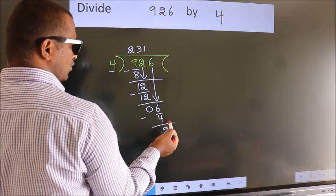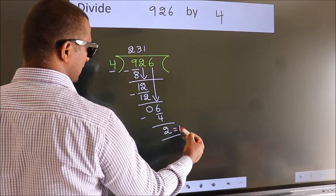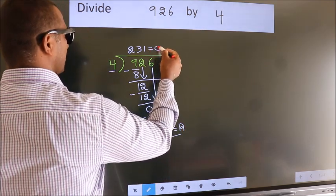No more numbers to bring down, so we stop here. This is our remainder. This is our quotient.